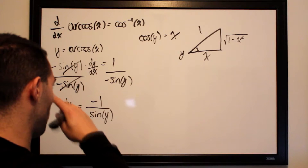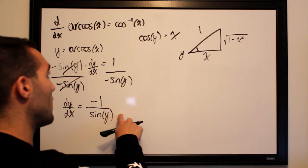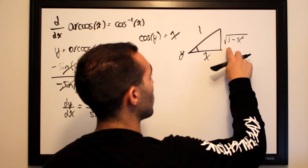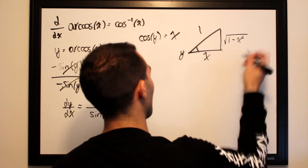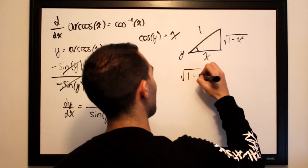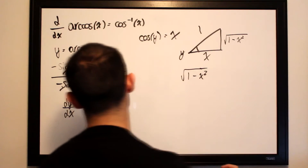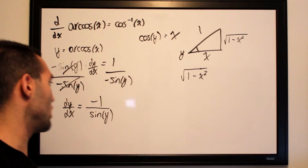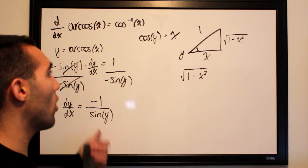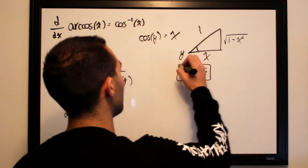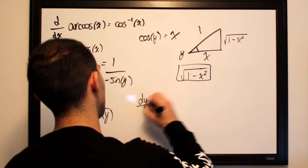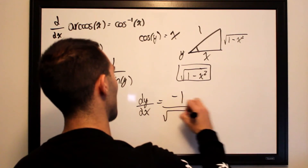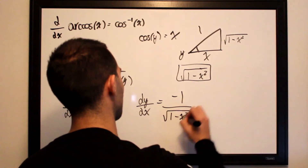The missing side is the square root of 1 minus x squared. So sine of y — opposite over hypotenuse — equals the square root of 1 minus x squared over 1. Substituting back, dy/dx is equal to negative 1 over the square root of 1 minus x squared.